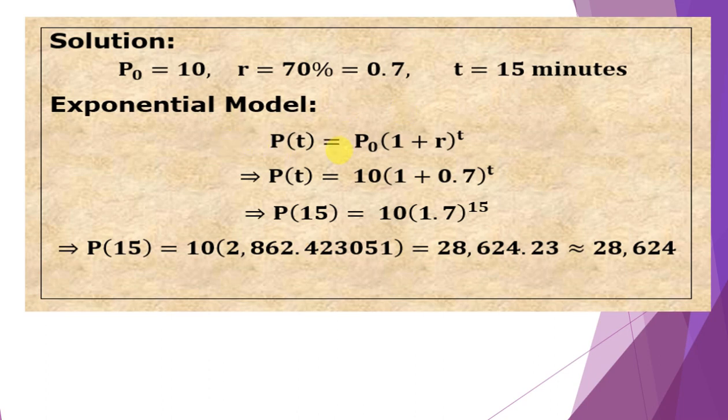For our exponential model, we have P(t) = P₀(1 + r)ᵗ. Then plugging in the given, P(t) = 10(1 + 0.7)ᵗ = 10(1.7)ᵗ.